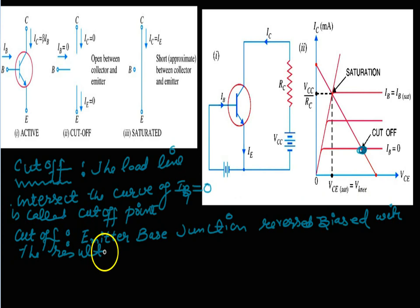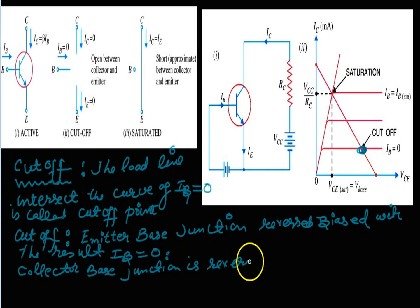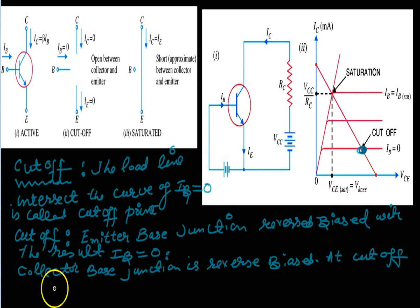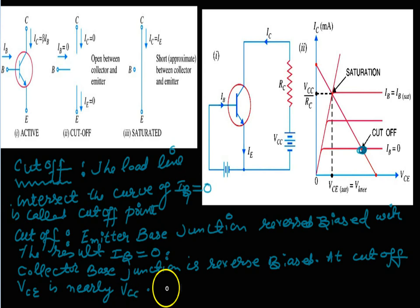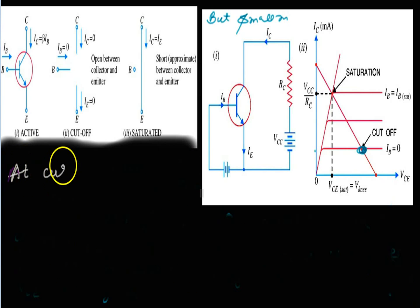At the cutoff point, the emitter-base junction is reverse biased as well because IB is equal to zero. The collector-base junction is also reverse biased at cutoff. At cutoff, VCE is nearly equal to VCC. Since IB equals zero, there will be no majority current carriers.